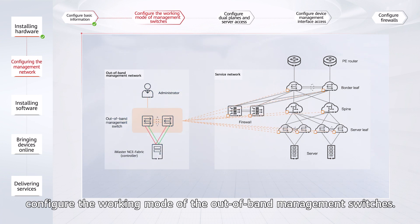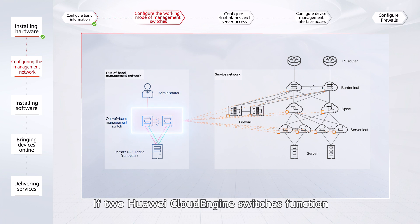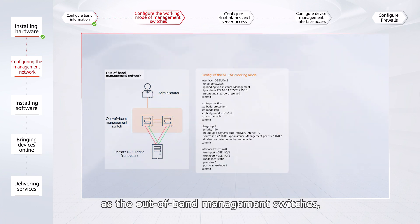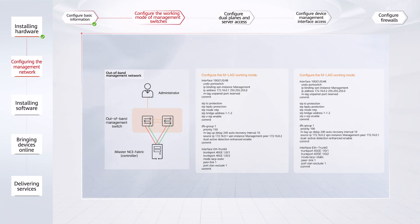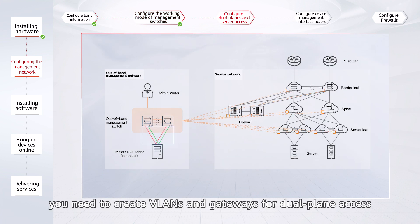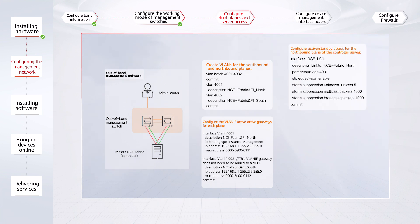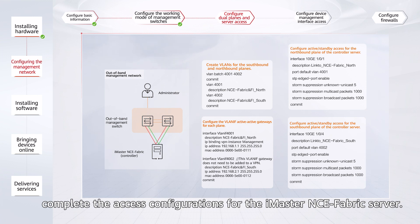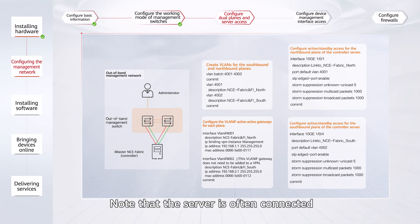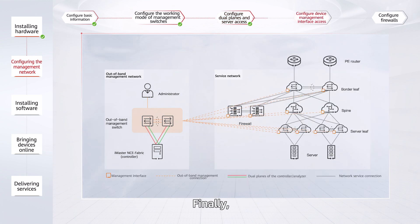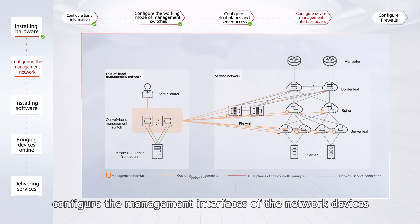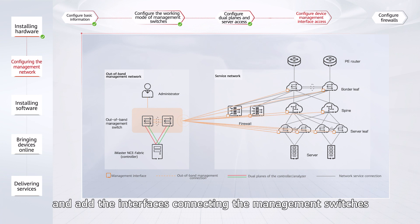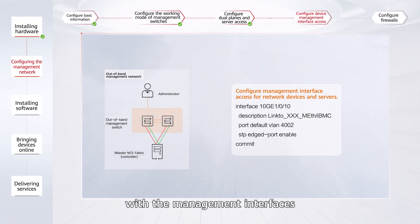Then, configure the working mode of the out-of-band management switches. If two Huawei CloudEngine switches function as the out-of-band management switches, you are advised to configure them in an M-LAG. If other switches are used, configure them as required, for example, in a stack. Next, you need to create VLANs and gateways for dual-plane access of iMaster NCE Fabric. Then complete the access configurations for the iMaster NCE Fabric server, noting that the server is often connected in active-standby bonding mode. Finally, configure the management interfaces of the network devices and servers to connect to the management switches and add the interfaces connecting the management switches with the management interfaces to the southbound network plane VLAN configured in the previous step.